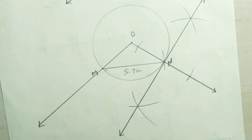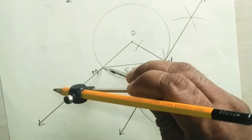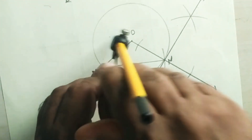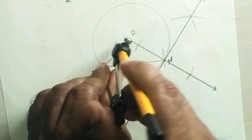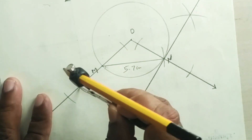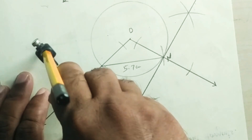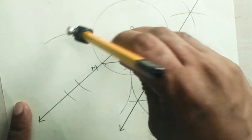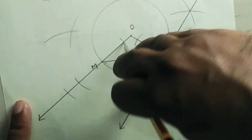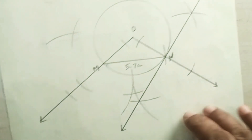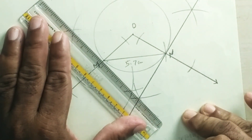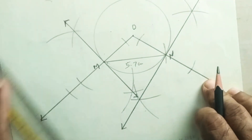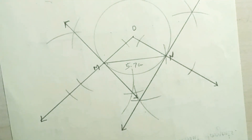Similarly, keep the pointer at M and draw two arcs — one on the left and one on the right. Take the same length, draw one arc above and one below, then keep the pointer at the other arc cutting ray OM. Cut the arcs and draw the tangent passing through point M. This is how we construct tangents passing through points M and N.